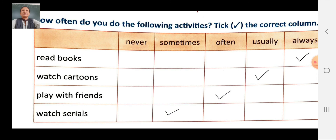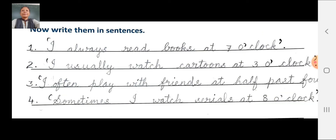Options: never, sometimes, often, usually, always. Activities: read books, watch cartoons, play with friends, watch serials. First: 'I always read books at seven o'clock' — put single inverted comma then full stop. Second: 'I usually watch cartoons at three o'clock' — single inverted comma then full stop. Third: 'I often play with friends at half past four' — single inverted comma then full stop. Fourth: 'Sometimes I watch serials at eight o'clock' — single inverted comma then full stop.